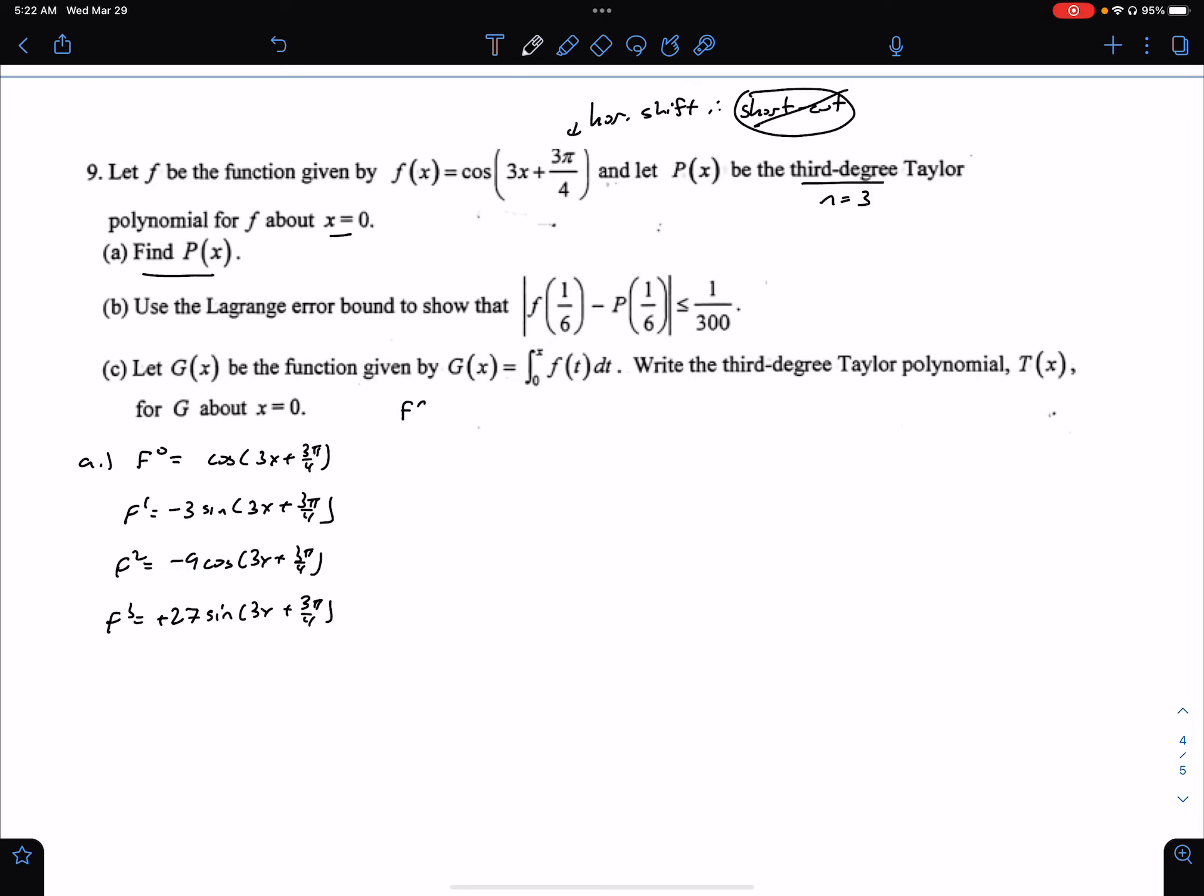And now we're going to find the value of the derivative at zero. That's not too bad to do. Cosine of 3π/4 is negative √2/2. This becomes sine of 3π/4 is positive, so it's negative, but with the negative 3 out there, negative 3√2/2.